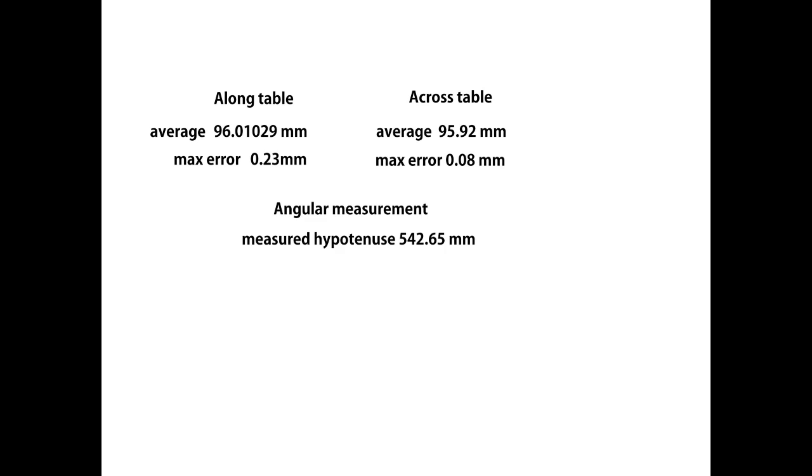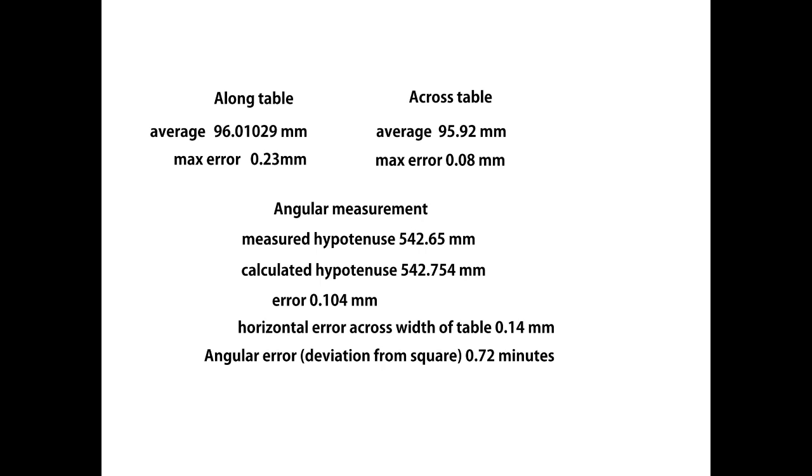When it comes to the angular measurement, as you can see the error is 0.14 millimeters. When that is translated to an error across the table, it works out as 0.72 minutes of arc. That's pretty accurate.